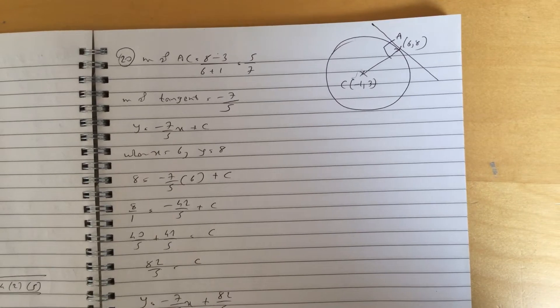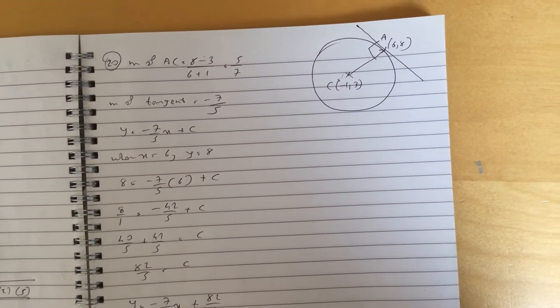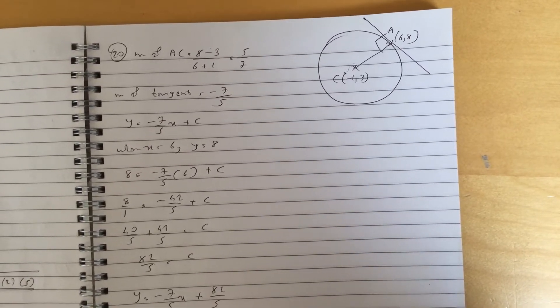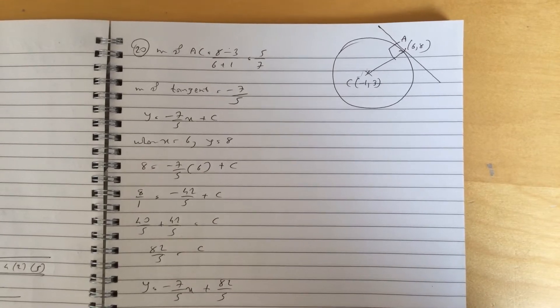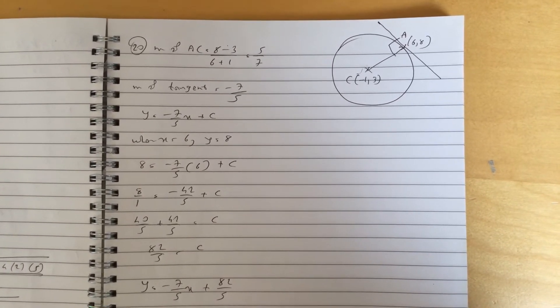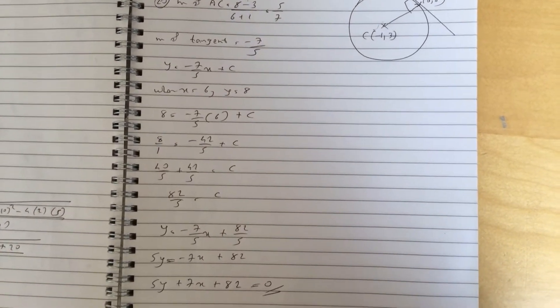So the gradient of the tangent will be minus 7 fifths because it's perpendicular. Remember, radius is perpendicular to a tangent at the point of tangency. So that means y equals minus 7 fifths x plus c. I plugged in the point A, which is when x equals 6, y equals 8, and found c which is 82 over 5.